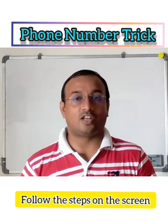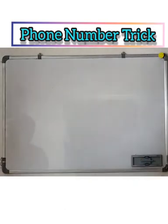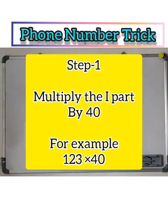Now, ask him to follow the steps what I give on the screen friends. Follow. Step 1: Multiply the first part, that is the first three digits, with 40.